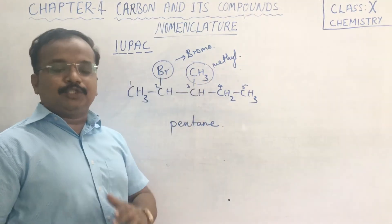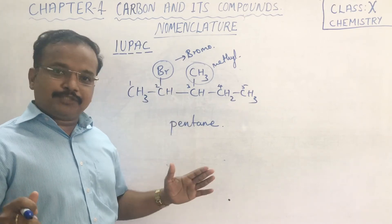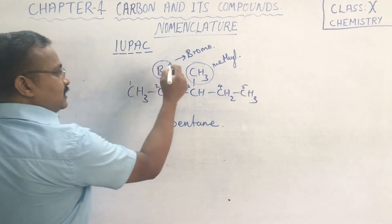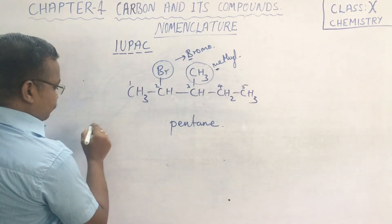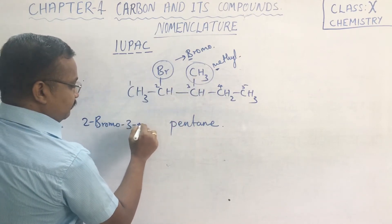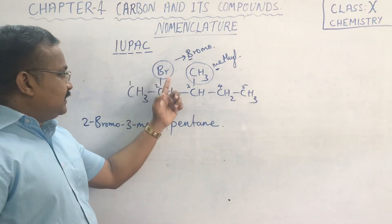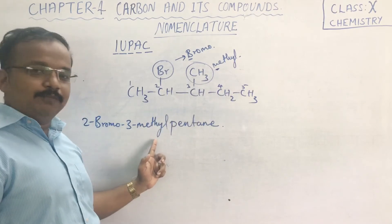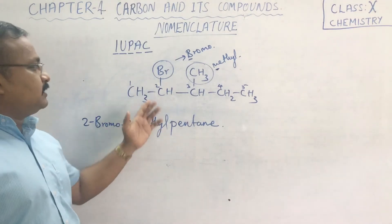These two are substituents only. Halogen compounds are not main functional groups, so they are also taken as substituents and written before the parent chain's name. Since 'bromo' — B — comes before 'methyl' — M — in alphabetical order, we write the positional numbers as: 2-bromo, then in the third position 3-methyl, then pentane. So the name is 2-bromo-3-methylpentane.